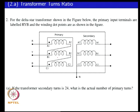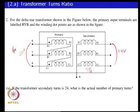The next problem is about a delta-y transformer. Your primary voltage is 66 kV and your secondary voltage is 11 kV on a line-to-line basis. If you look at your secondary which is Y, your voltage on your winding is 11 divided by root 3. The first question is to calculate what your primary turns would be if your secondary turns is 24, so you have the turns ratio.